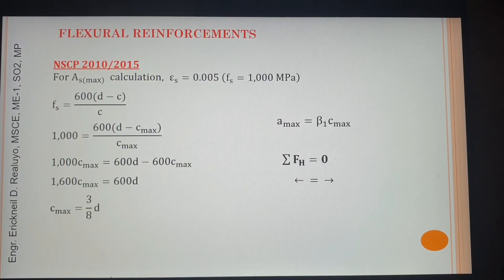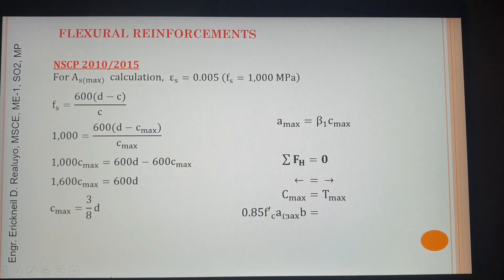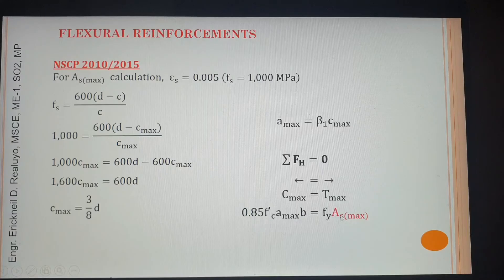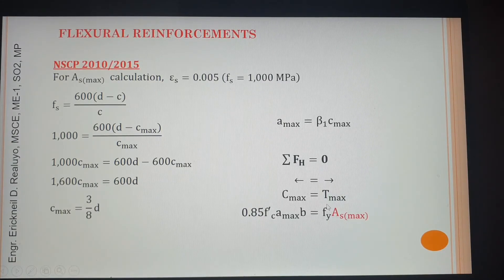When calculating As_max, I will no longer use the old derivation. I will go directly to the result: c_max equals 3/8 of d. I will no longer be showing the full derivation of this 3/8·d expression going forward.